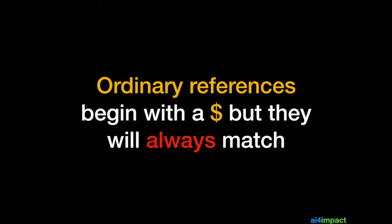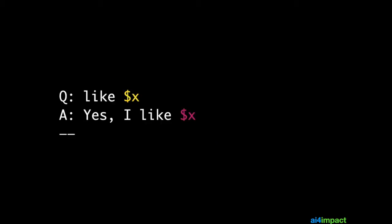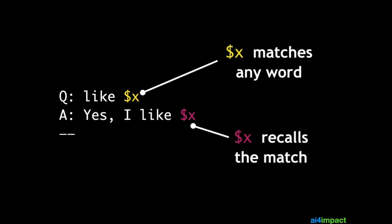Ordinary references begin with a dollar sign but they will always match. So in this example, like dollar x will match any word after like. In the same way, if you use dollar x in your answer it will be recalled. So dollar x is called an ordinary reference because there is no type directly associated with it.